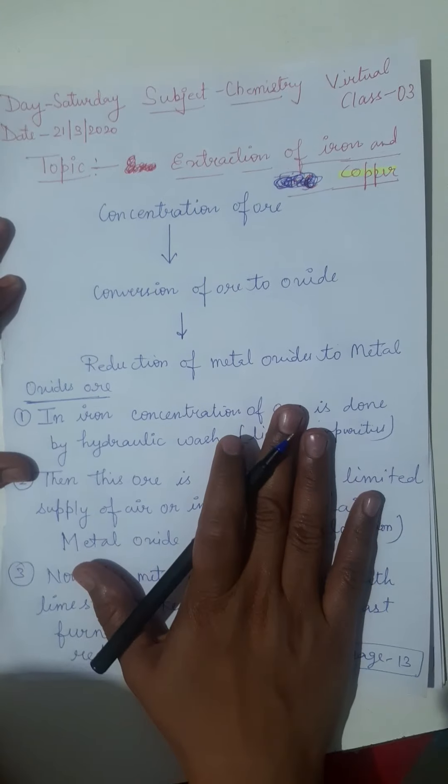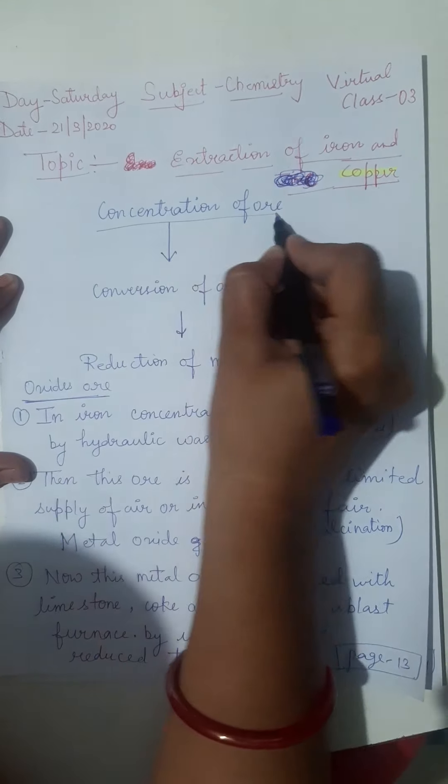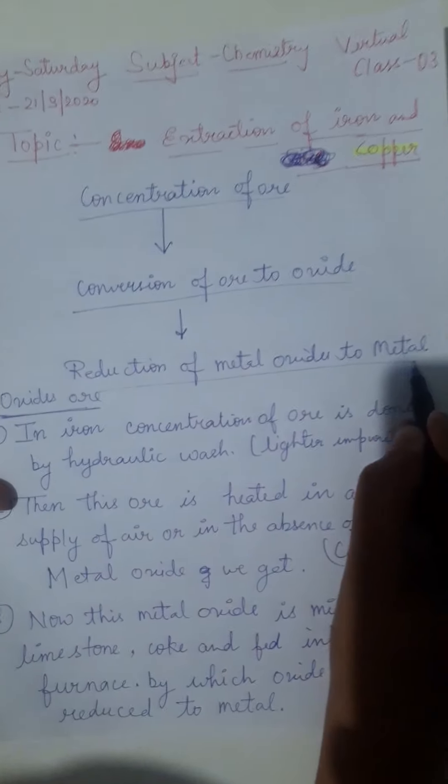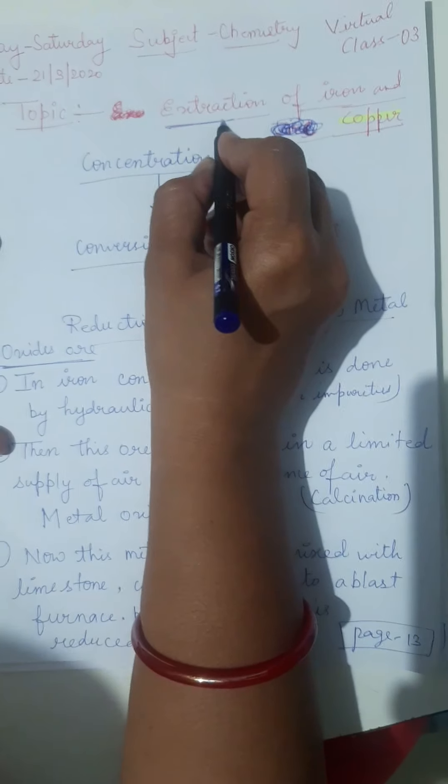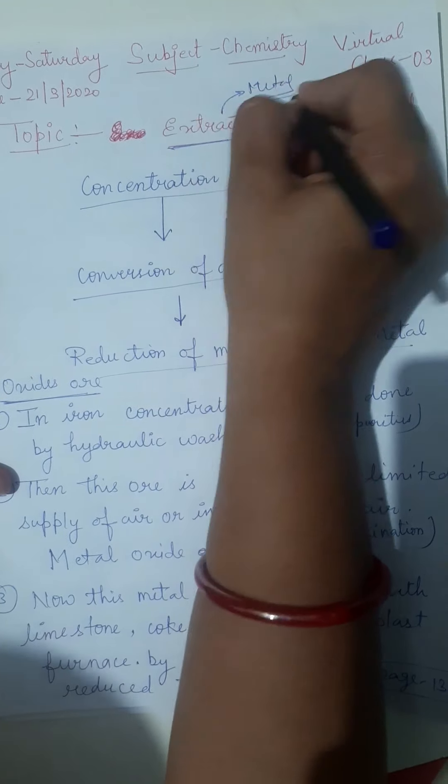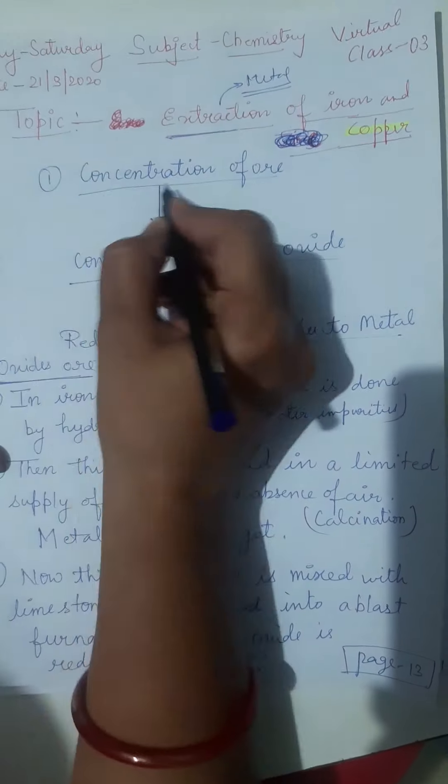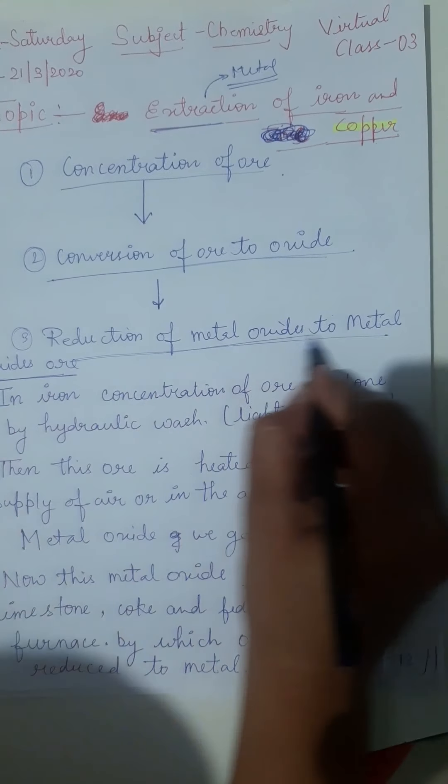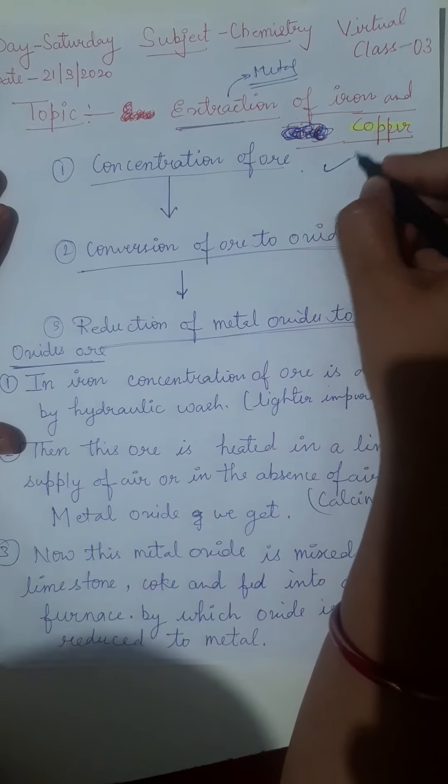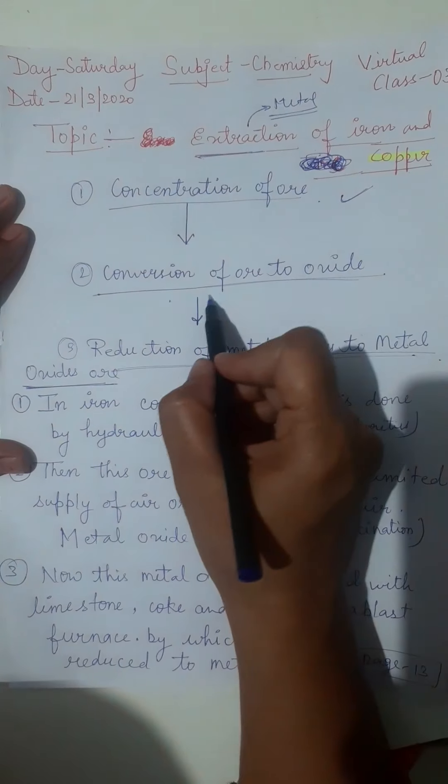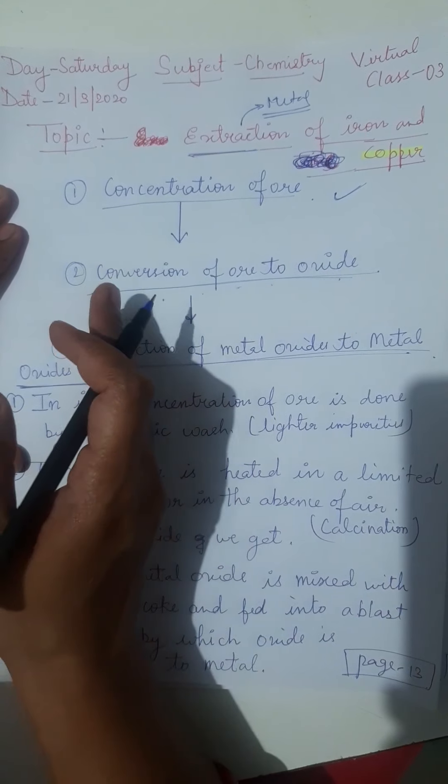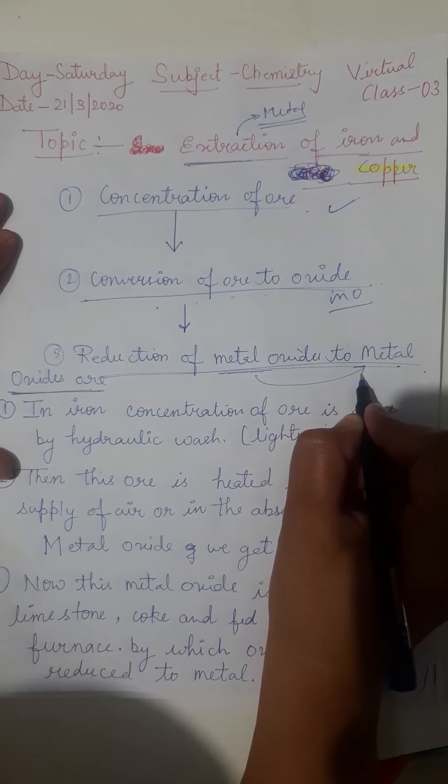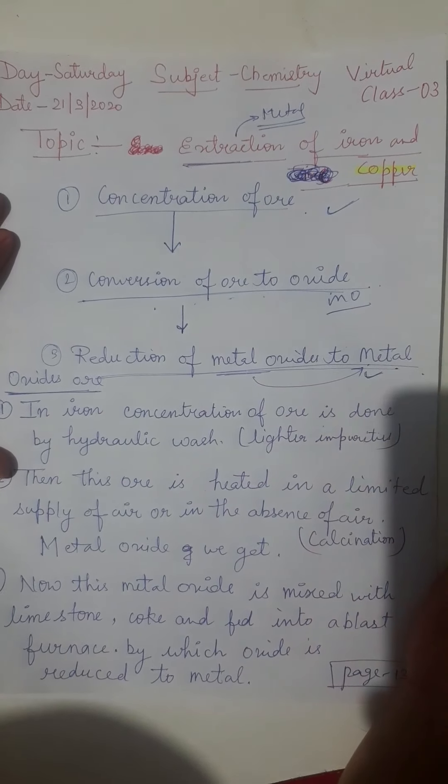Till now we studied metallurgy, conversion, reduction, Ellingham diagram, thermodynamics principles used in metallurgy. Today's topic is extraction of iron and copper. So what is the process of this extraction? Concentration of ore, conversion of ore to oxide, and reduction of metal oxide to metal. This is the process from where we will get the metal.